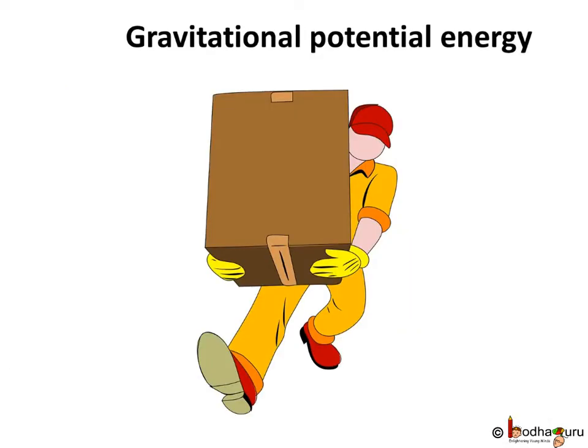You know, an object increases its energy when raised through a height. Why? Now, whenever we lift some object, we do work against gravity which leads to increase of energy in the object. And it is called gravitational potential energy.